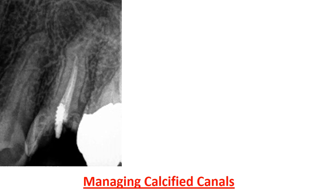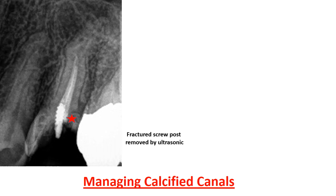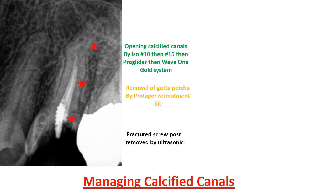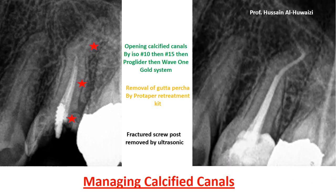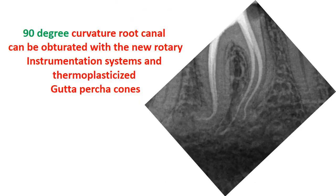A very difficult case was presented involving a fractured screw. It was removed by ultrasonics, followed by removal of gutta-percha with ProTaper retreatment kit, then opening the sclerotic calcified canal and obturating by Thermafil. The case had a 90-degree curvature in the apical area, which was successfully obturated by Thermafil.